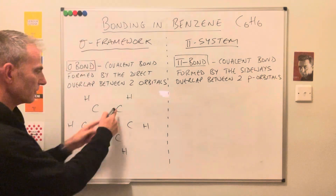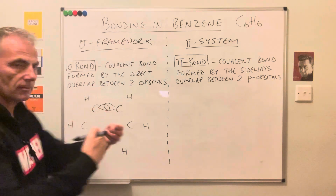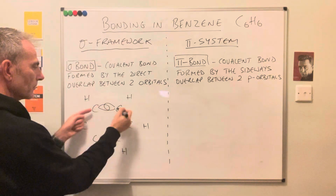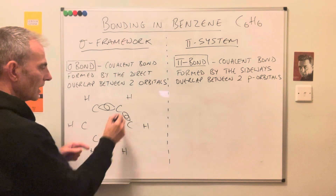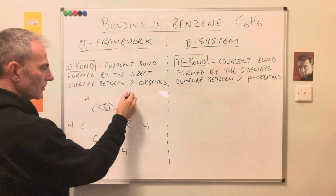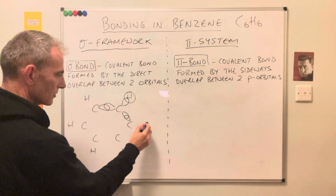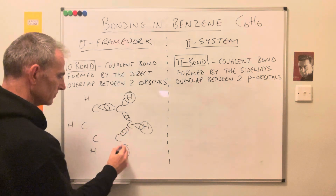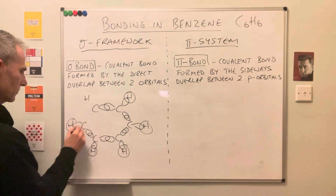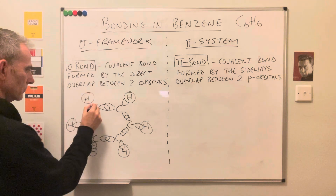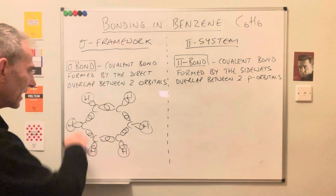Each carbon atom forms three sigma bonds. If we focus on this carbon here, it's going to form a sigma bond with this carbon — an electron from each carbon gives a shared pair of electrons between them. Likewise, the next two carbons do the same, and then we bond the hydrogen, also by a sigma bond. Every carbon does exactly what that one's just done. This is what we call the sigma framework: a flat, planar hexagonal ring of covalent sigma bonds.